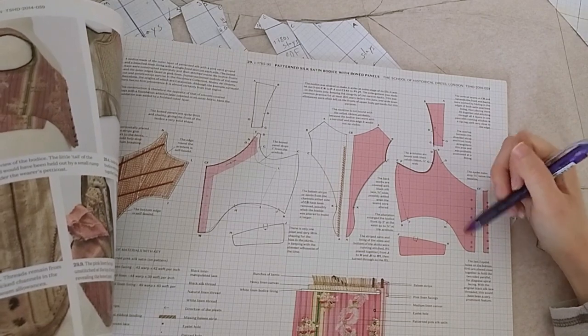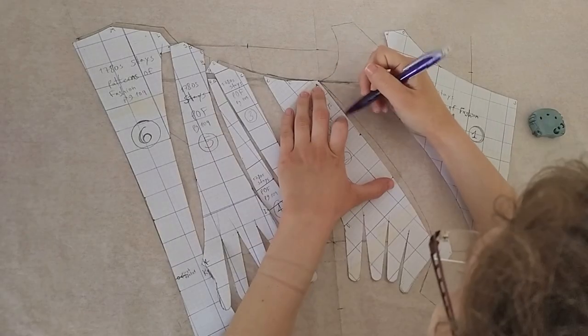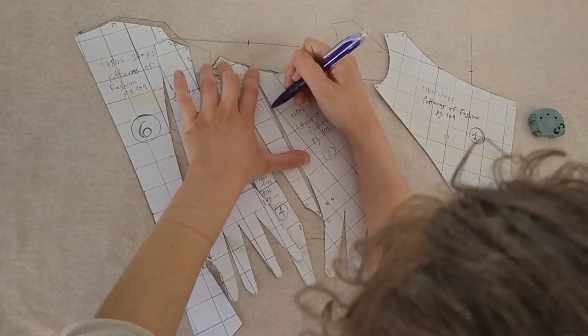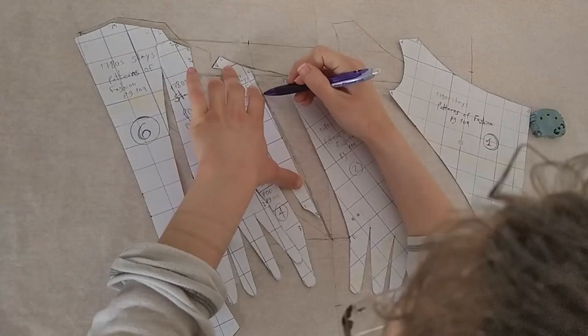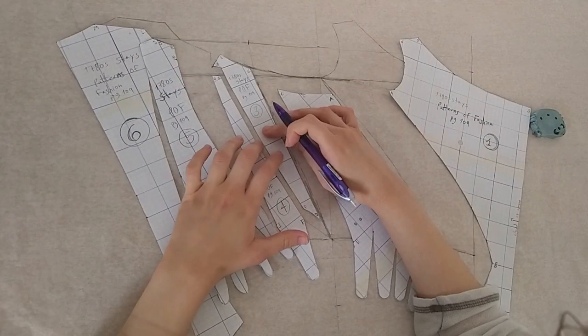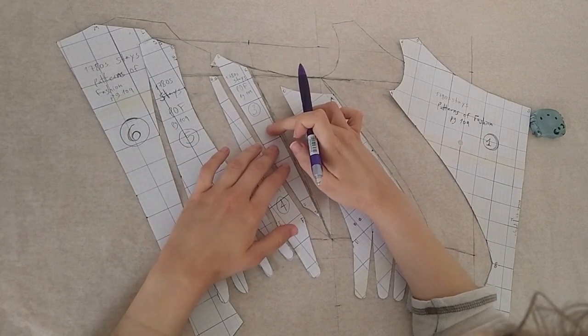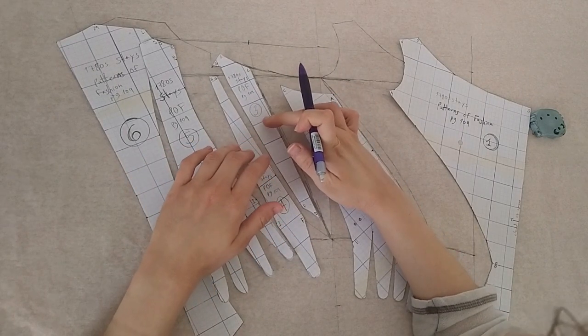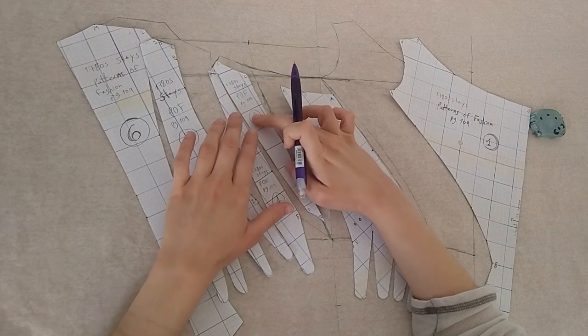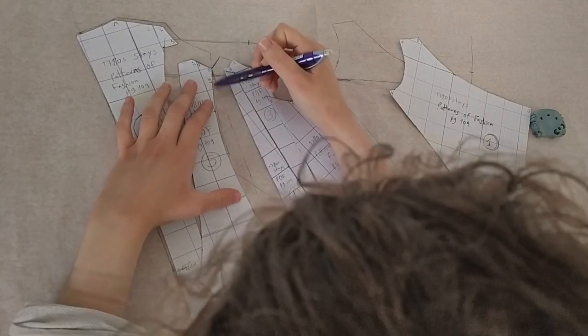In this pair of 1790 stays in the book, the front point is rounded. So that's what I'll do for my stays. And I'm just continuing to draw these side seams. I'm just going to keep the space between the pieces the same as it was in the original pattern, and thus make the pieces themselves bigger. I'm going to treat these two pieces as one, because it says in the book that this piece was most probably an extension added after a fitting, because there's both no boning in this piece, and these two pieces meet up with no gap. So I'm going to treat them as one pattern piece, and not draw a line between them.